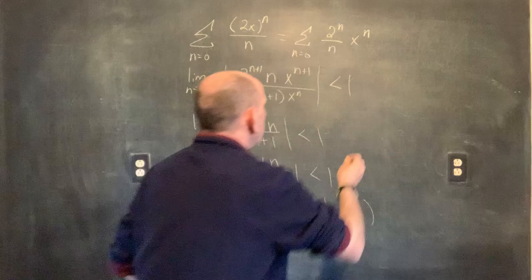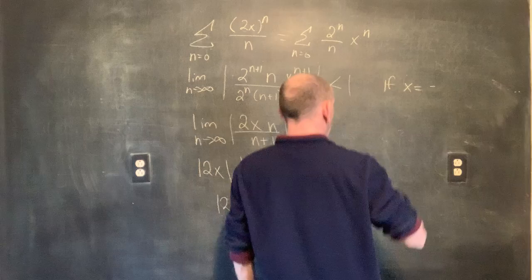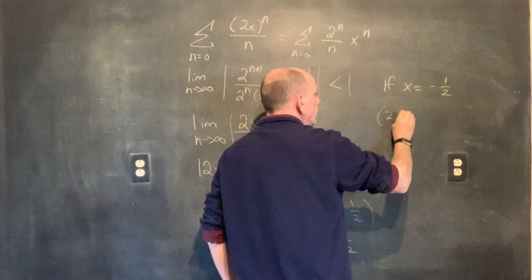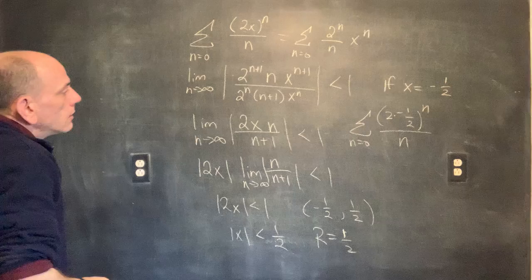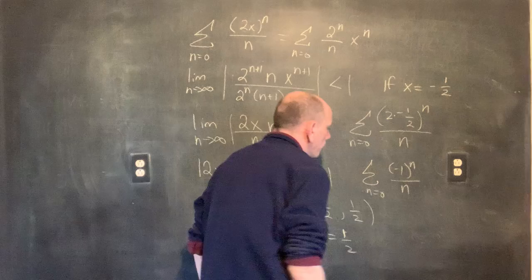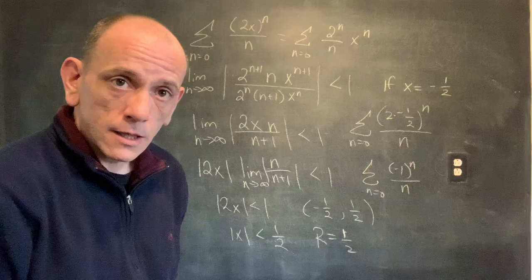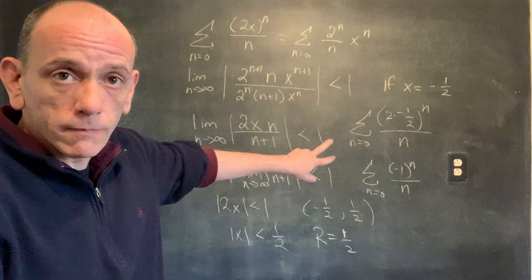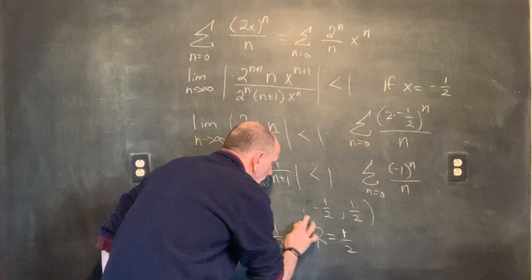We need to double-check the endpoints. If x equals negative 1/2, we get 2 times (negative 1/2) to the n over n — that's just (negative 1)^n over n. That is the alternating harmonic series, which we know converges. It converges by the alternating series test: the terms are decreasing and going to zero, so that's enough.